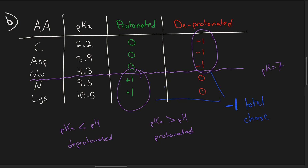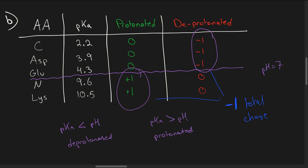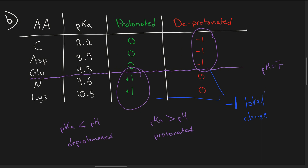Since we have a negative charge at pH 7, which is our neutrality point, this protein is acidic. Something that's acidic will generally have a negative charge and be mostly deprotonated at pH 7, while a basic protein would be mostly protonated at pH 7. So this protein has a total charge of negative one and is acidic.